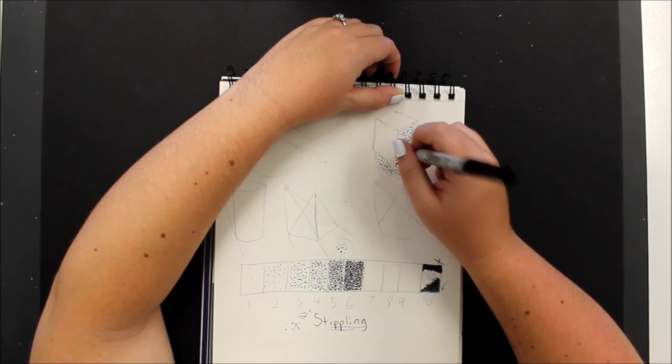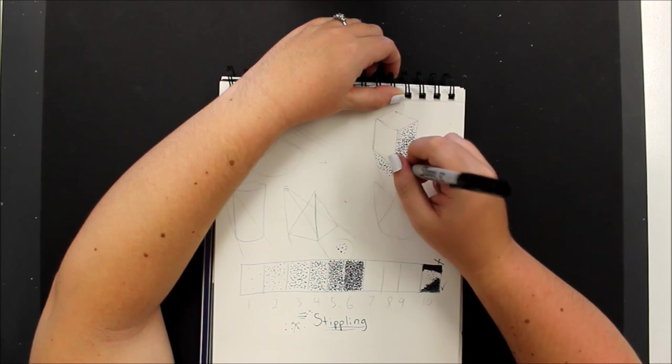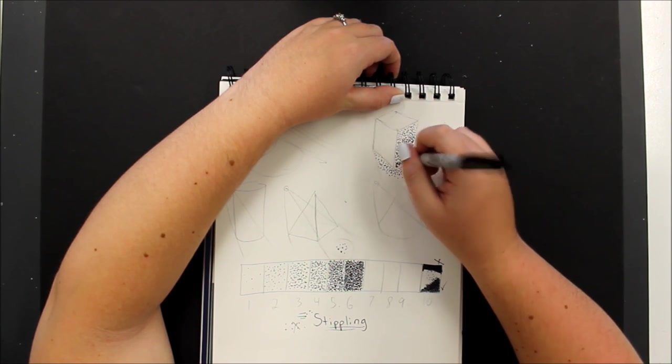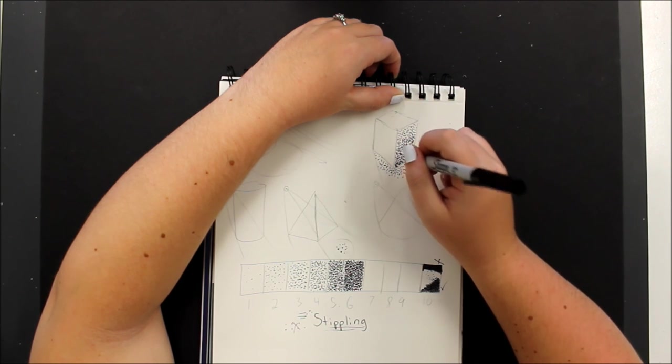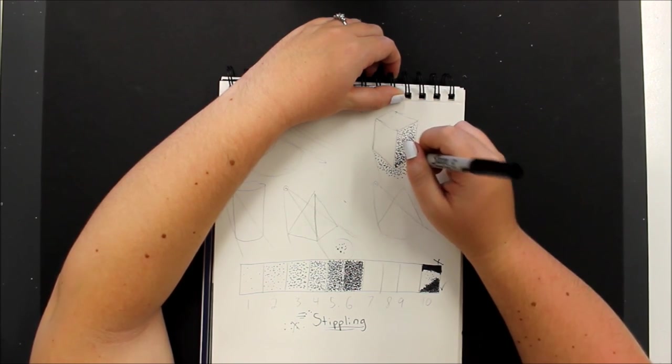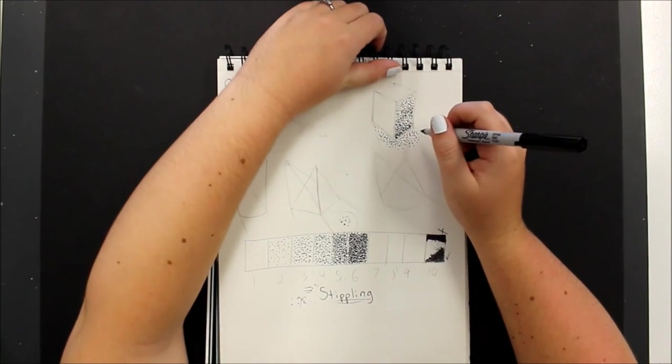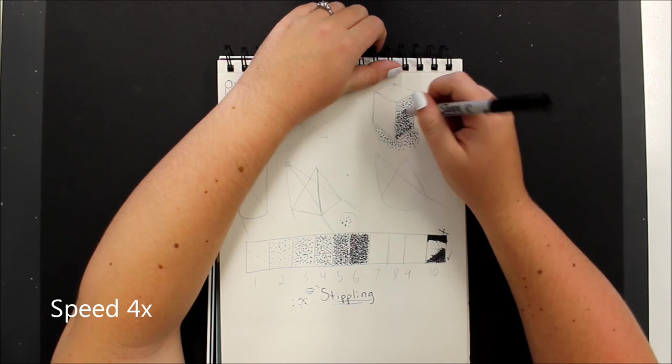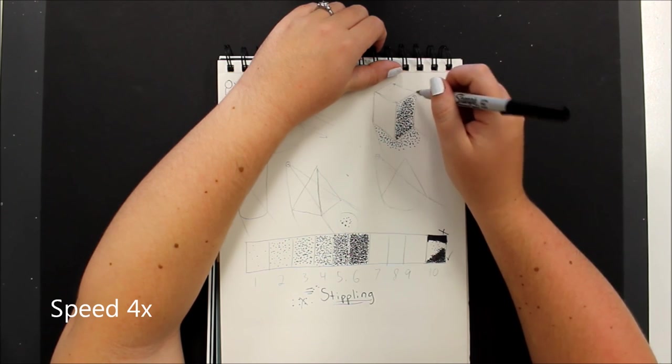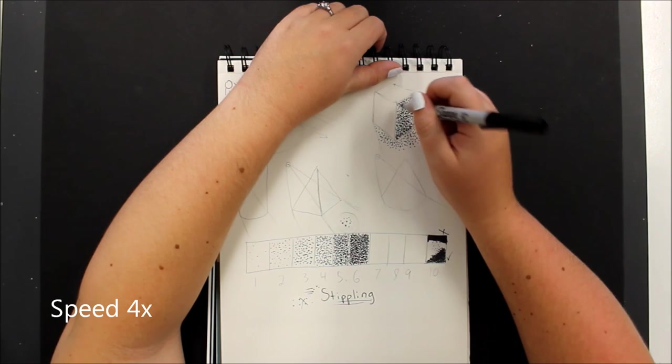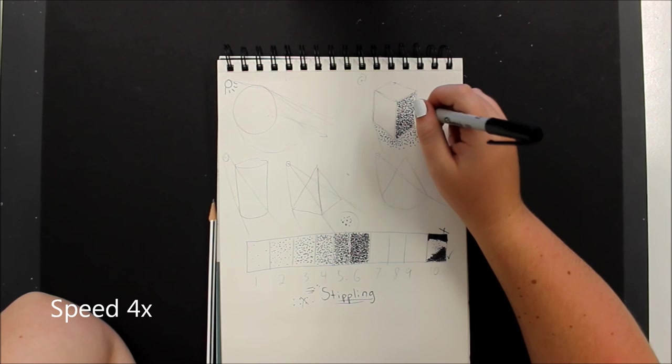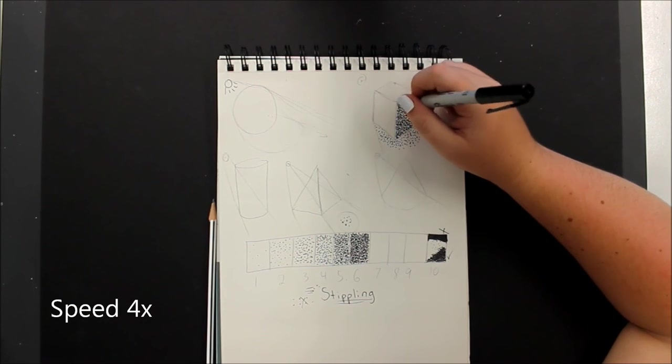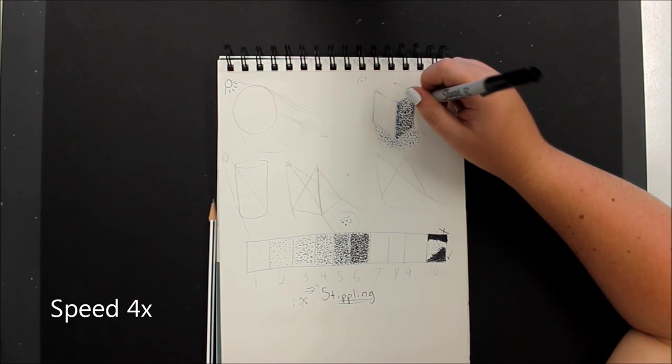If you start to get a cramp in your wrist, or in your hand, or in your arm, then take a break. Stretch out your arms, roll your wrist. And as you can see, now that I've filled it all in, I know that I need to start getting a little bit darker.